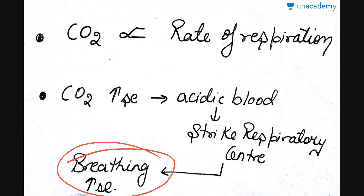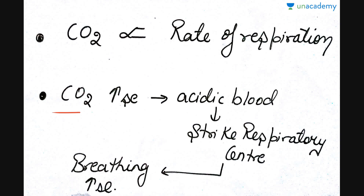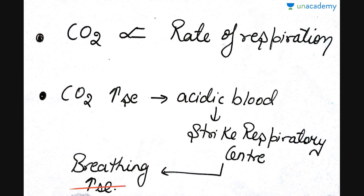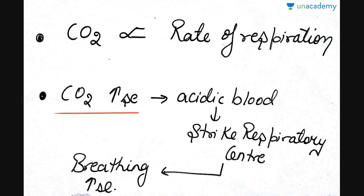So from this slide: if carbon dioxide increases, then breathing will also increase. Second point: if pH decreases, then breathing increases. Carbon dioxide is directly proportional to the rate of breathing, but pH is inversely proportional to the rate of breathing. If pH is decreasing, it will strike our respiratory center in the hindbrain and breathing increases.